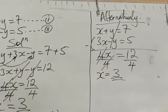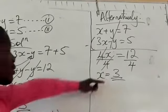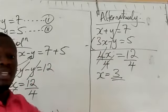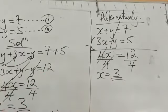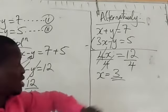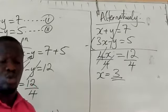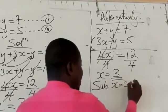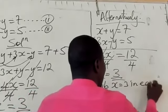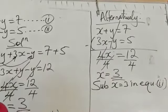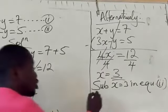After finding the value of x, we now substitute x equals 3 into equation 2 to determine the value of y. From equation 2, substituting x equals 3: equation 2 is 3x minus y equals 5. We replace x with 3. So we have 3 times 3 minus y equals 5.